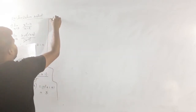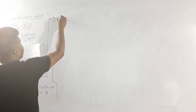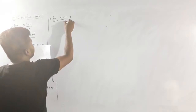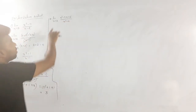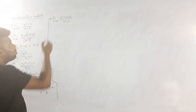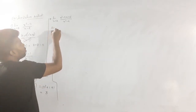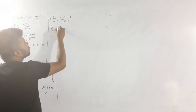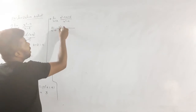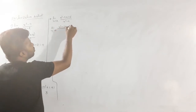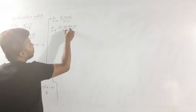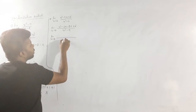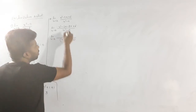Next: limit x tends to 2, x squared minus 5x plus 6, divided by x squared minus 4. Using the same logic, direct substitution gives 0 by 0. We factorize the denominator using the difference of squares formula: x squared minus 4 equals (x plus 2)(x minus 2).